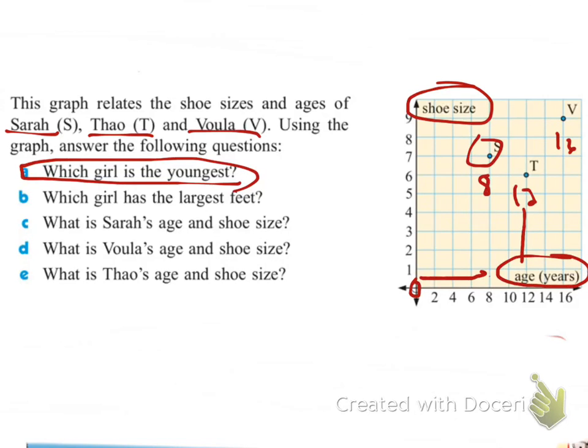Who has the biggest shoes? Well, again, now you're looking at the y-axis. From 0 all the way up, Voula is the highest on the y-axis, so Voula has the biggest shoes. So you want to be able to answer questions like that to determine, or just it shows relationships on a graph between two variables.